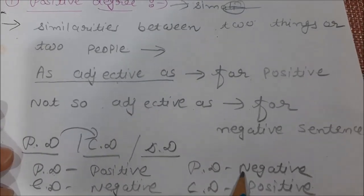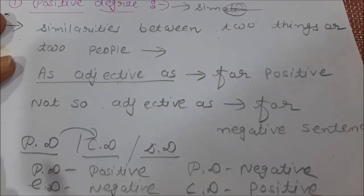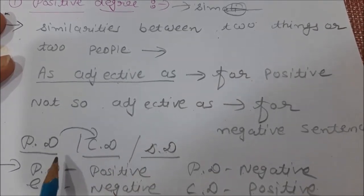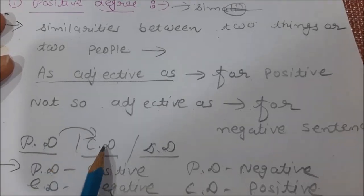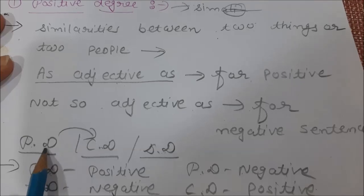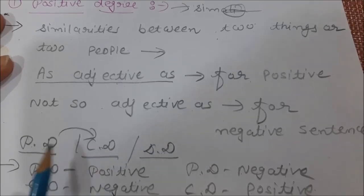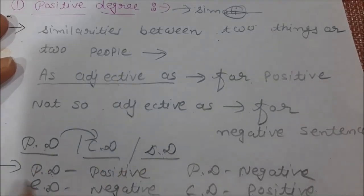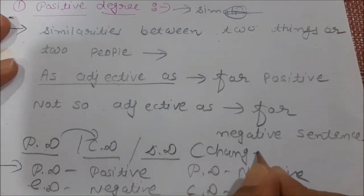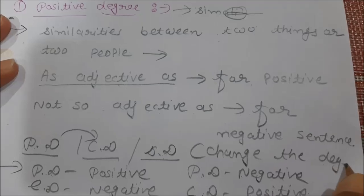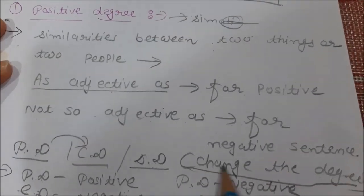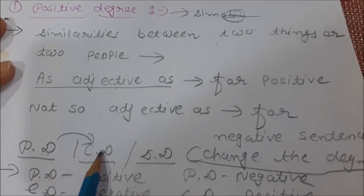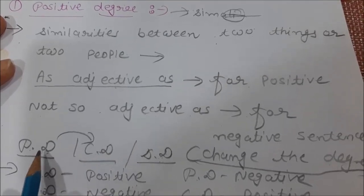Positive–negative, negative–positive: vice versa. This is the common rule for positive and comparative, not for superlative. In the exam, the bracket will say 'change the degree' — not 'turn into positive' or 'turn into negative.' So I prefer: if positive degree is asked, turn into comparative degree, and if comparative is asked, turn into positive degree. Don't go for superlative unless asked.